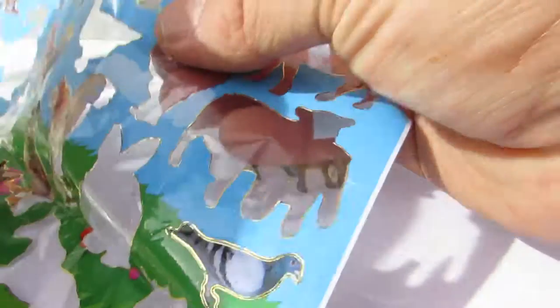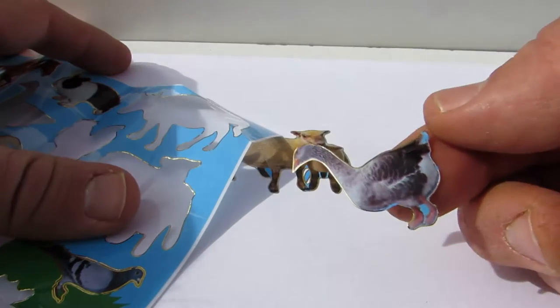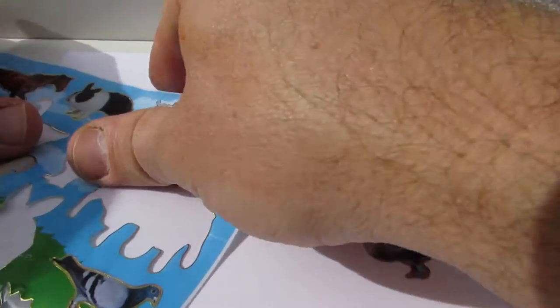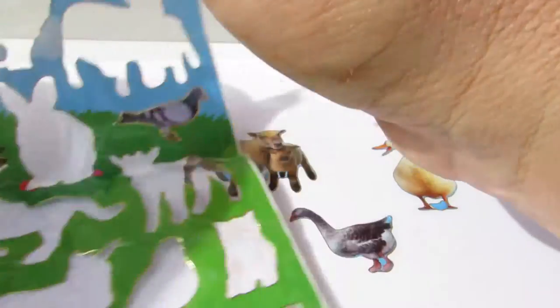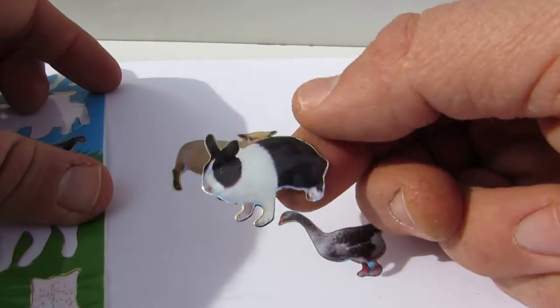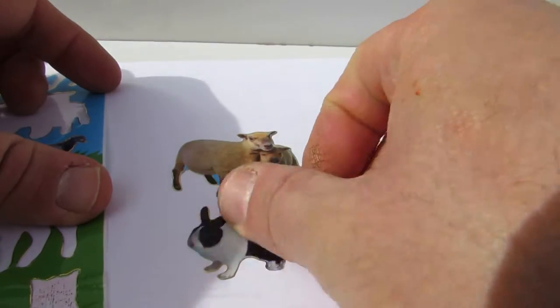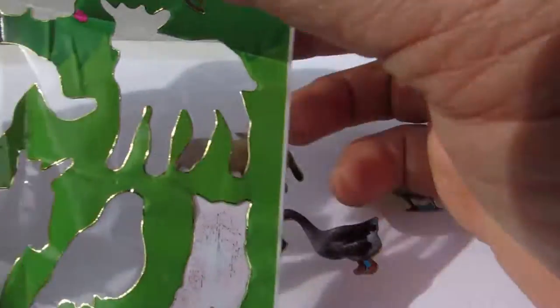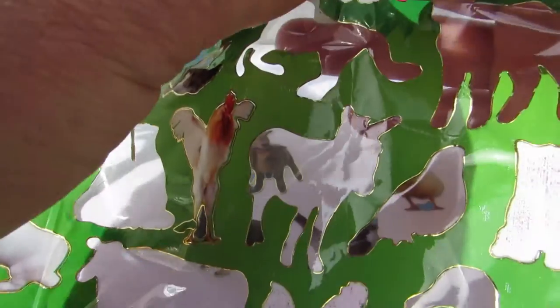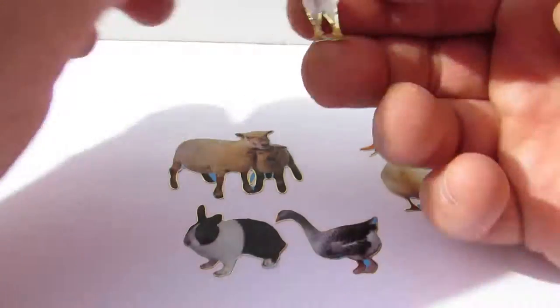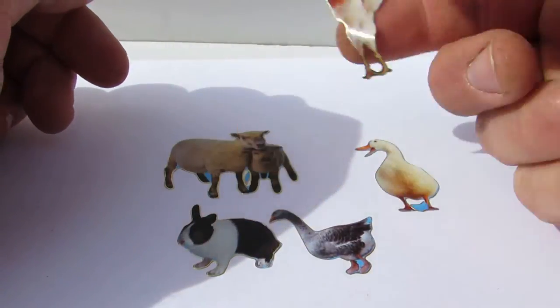And we have a goose, looks like a goose. What do you say about this? And we have a rabbit, or whatever it is, and it's a rooster.